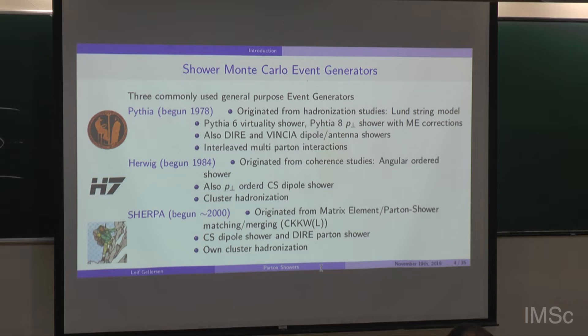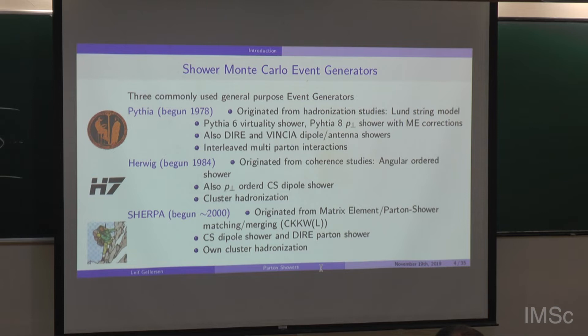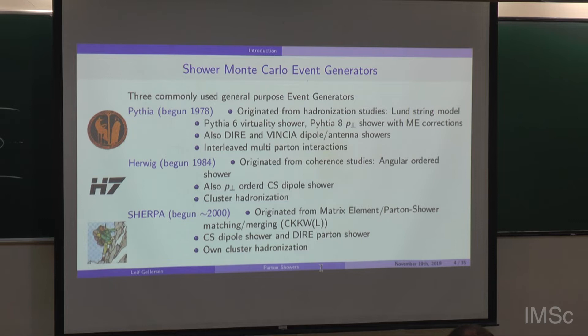Then there's Herwig — work began in 1984, originating from color coherence studies. The distinctive feature of Herwig is its angular-ordered shower that gets the color coherence right, and it also has a pT-ordered Catani-Seymour dipole shower. As opposed to Pythia, it uses a cluster hadronization model. The third generator is Sherpa, work began in the early 2000s, originating from matrix element and parton shower matching and merging. It relies on the Catani-Seymour dipole shower and also has an independent implementation of the Dire shower, based on cluster hadronization.